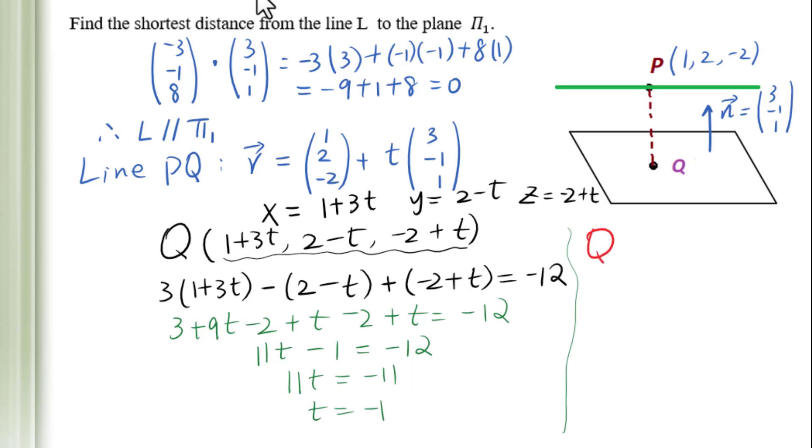Therefore, the coordinates of Q are: 1 + 3(-1), 2 - (-1), -2 - (-1), which is (-2, 3, -3).